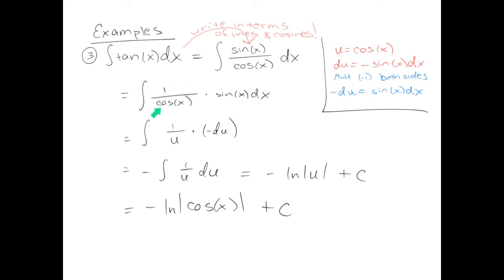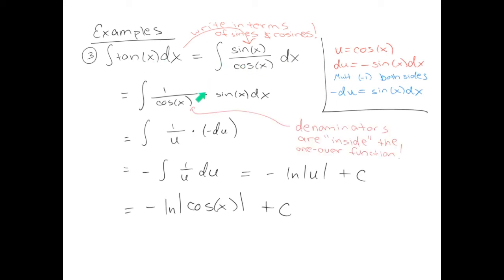Also notice that 1/cosine might not seem like a composition of functions, but it is — the outside function is the 1/x function, and the inside function is cosine. Anytime you have something in the denominator, the denominator is always composed inside the 1/x function. So if you're looking for the inside function, consider the denominator. You can either understand the strategy for deriving every step, or you could memorize that the antiderivative of tangent is −ln|cos(x)|. The risk with memorizing is you might forget or mess it up — I prefer understanding every step because it also helps with other problems.